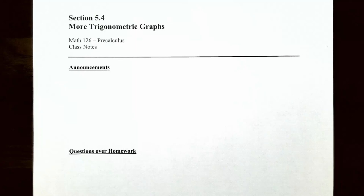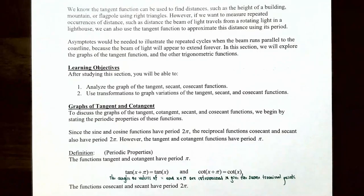Hi everyone, it's Professor Pemberton, and soon we're going to finish up our discussion on more trigonometric graphs. In the previous video we talked about how to analyze the graph of the tangent and cotangent functions and how to use transformations to graph variations of those functions. In this video we're going to talk about how to analyze the graph of the secant and cosecant functions and how to use transformations to graph variations of the secant and cosecant functions.